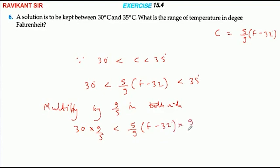Which is less than 35 × 9/5. Here 9/5 and 5/9 cancel. This is 6 times, and here is 7 times. So here is 54.